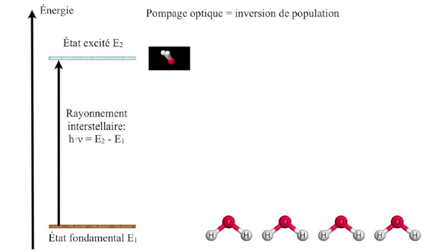The maser effect is produced after an inversion of population between two energy levels belonging to ortho- or para-water.